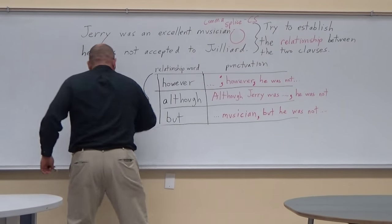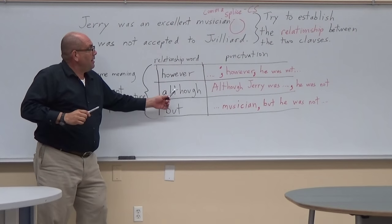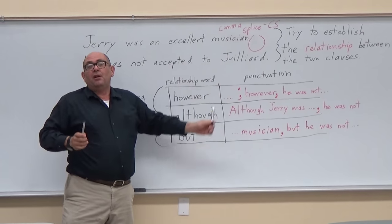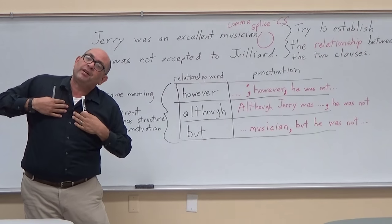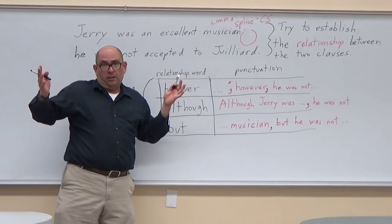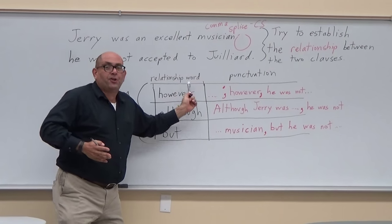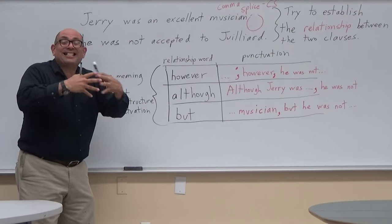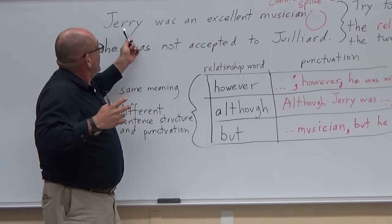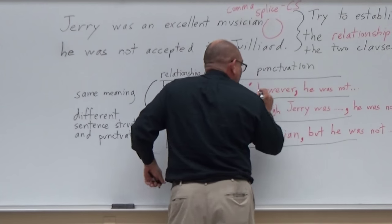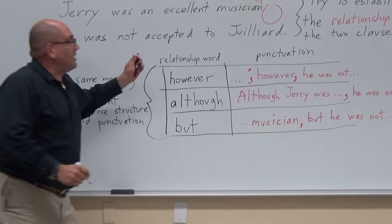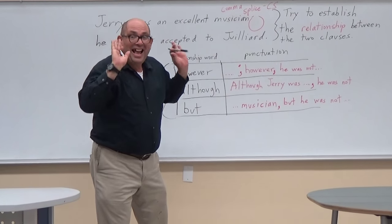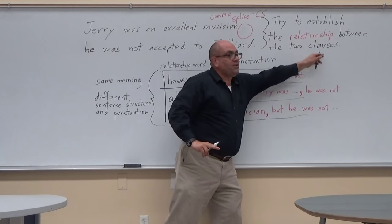The best thing to do is to look for a word that establishes a relationship between the two clauses. If Jerry was an excellent musician, logically he should have been accepted to Juilliard — that's what we would expect. But there is an inherent contrast in the clauses. So we look for a relationship word, also called a transition or a conjunction. Take a look at this: 'Jerry was an excellent musician; however, he was not accepted to Juilliard.' The semicolon-however-comma eliminates the comma splice and, more importantly, establishes the relationship between the two clauses.